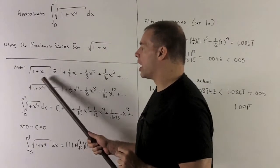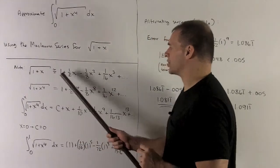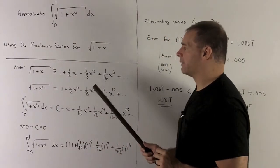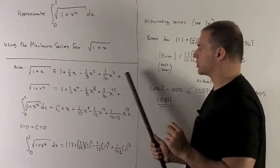So to start out, we already saw the Maclaurin series for square root of 1 plus x starts out like this: 1 plus a half x minus an eighth x squared plus a sixteenth x cubed, and so on.